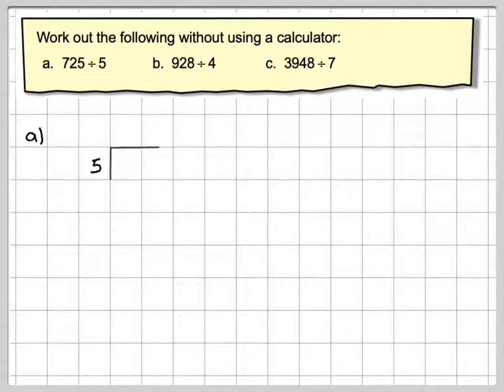So setting out the first one, we have 5 and then we have 725 and then we need to draw this line in here. And then we proceed to do this, 7 divided by 5. So you need to realize that 5 is being divided into 725, not the other way around.